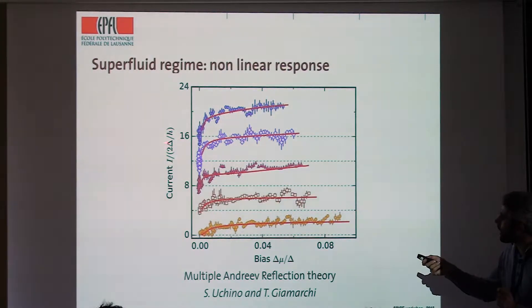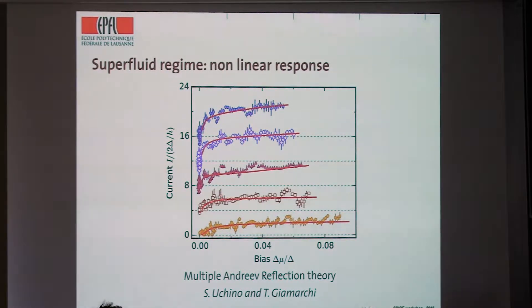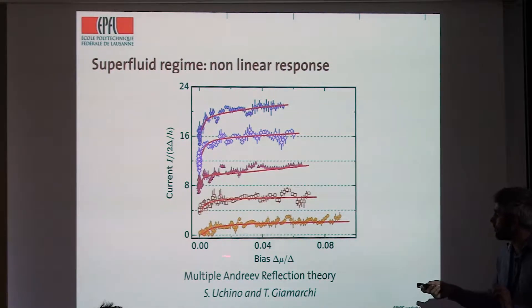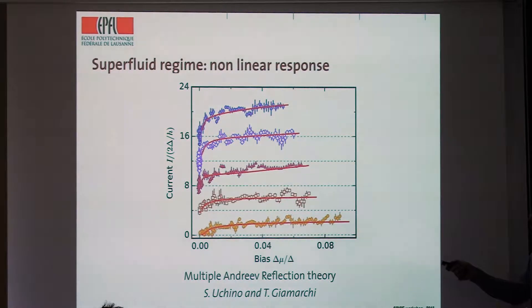At unitarity we know the pairing gap, so we can normalize the current by it. The only fitted parameter is the transmission coefficient of the channel, which turns out to be 96-98%, consistent with the nice quantized conductance measured in the non-interacting state. This tells us about the mechanisms in the superfluid state under very strong interactions. This is not a proof of multiple Andreev reflections — we don't see the subharmonic structure — we're in a regime very close to 100% transmission, so this is a hint about what's happening in the channel rather than a bulletproof demonstration.